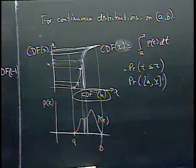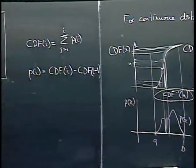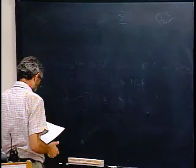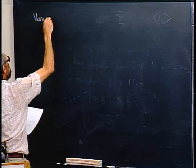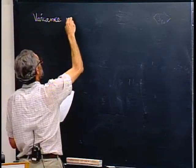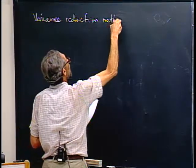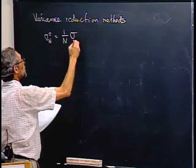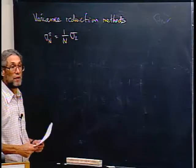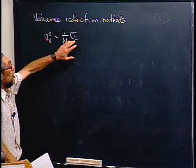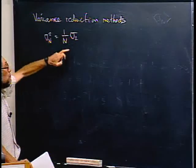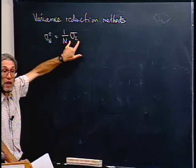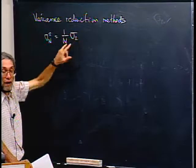Now I want to show an application — variance reduction methods. We had σ²_n = (1/n) × σ²_1 for n samples (proved last time). To get the same error with fewer samples, it helps to reduce σ²_1 (the single-sample variance). To integrate ∫_a^b f(x) dx with uniform p(x) = 1/(B−A), our single-sample estimate is f(x_i) / (1/(B−A)) = (B−A)·f(x_i). But we don't have to use uniform probability.